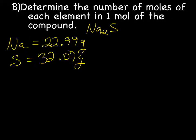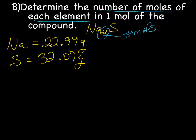The next step is to determine the number of moles of each element in one mole of the compound. So the subscripts here tell you the number of moles. That means we have two moles of sodium and one mole of sulfur.